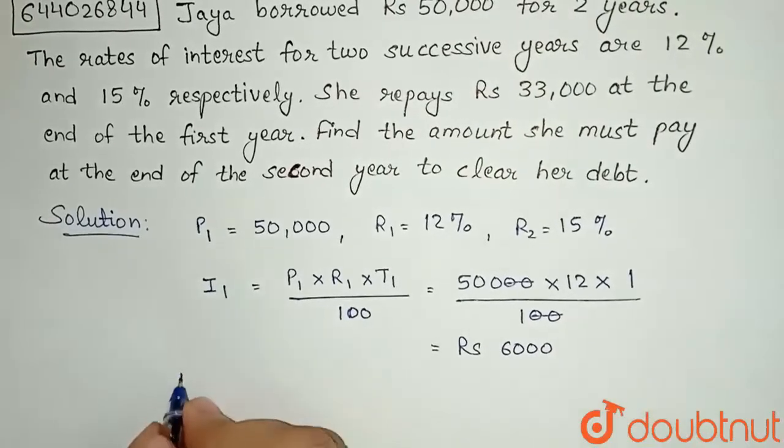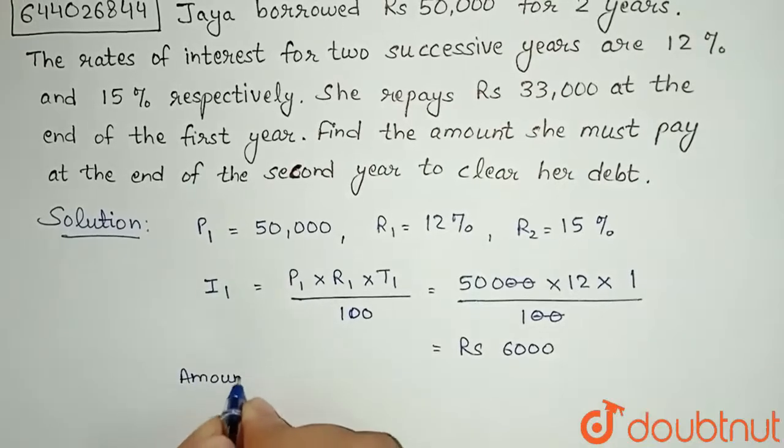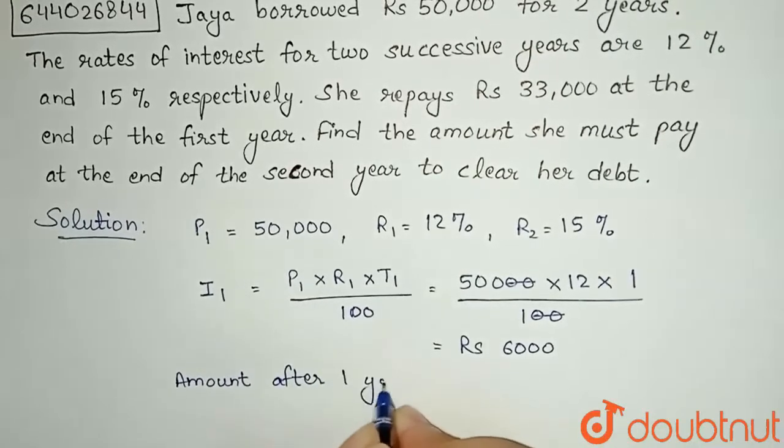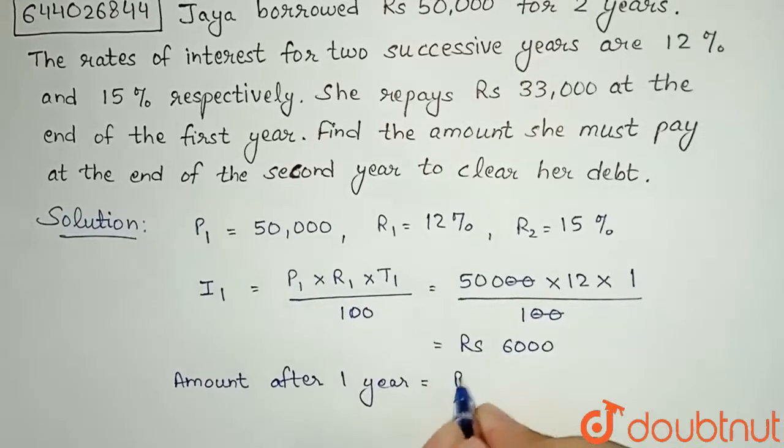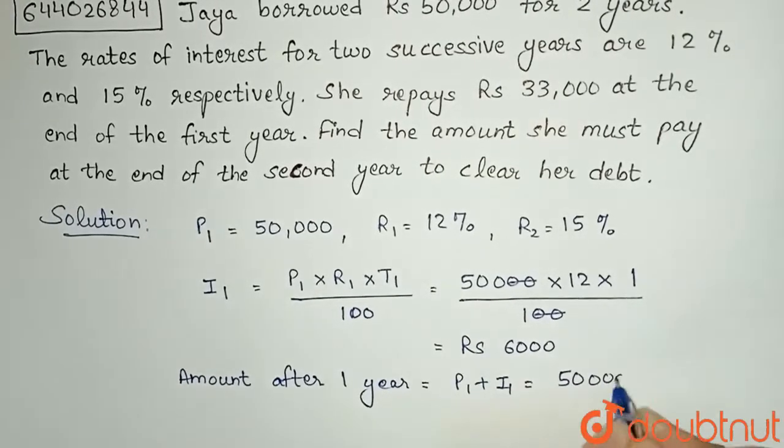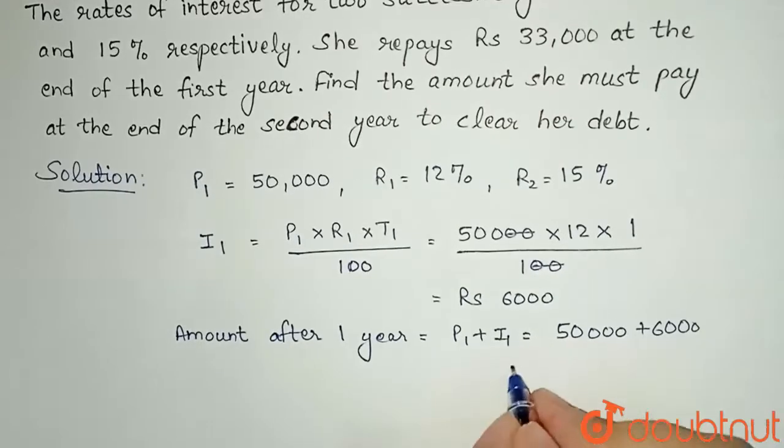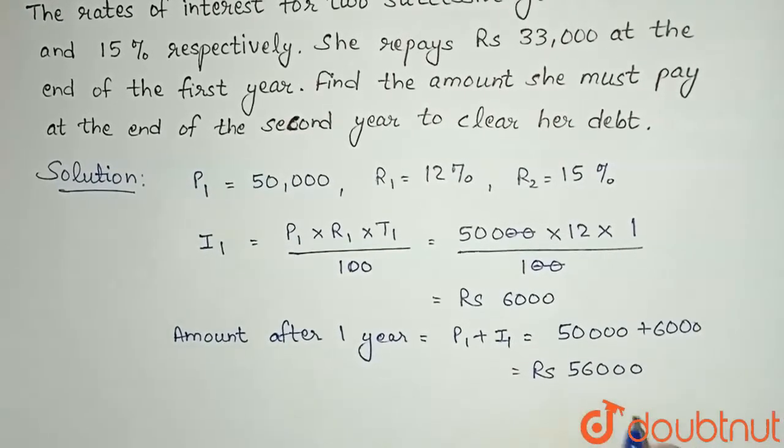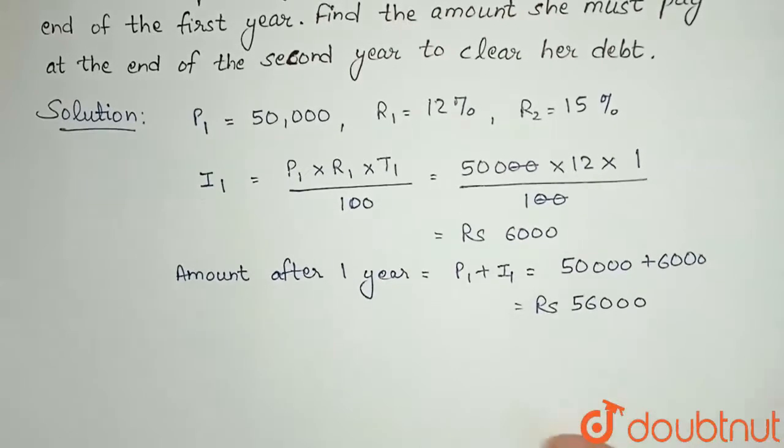Now we will find the amount after one year. Amount after 1 year = P1 + I1, which is 50,000 + 6,000 = Rs 56,000. But in the question, we are given she pays Rs 33,000 after the first year.